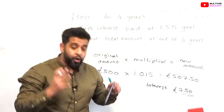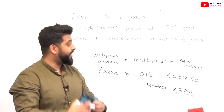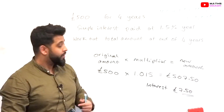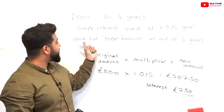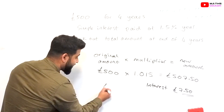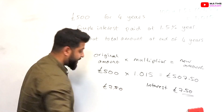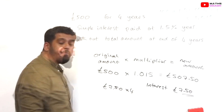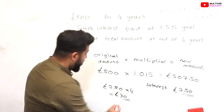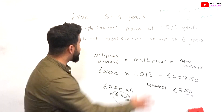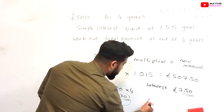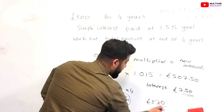Unlike compound interest, the next year you don't get 1.5% on the new amount — it's always on your original amount. The question asks for the total at the end of four years, so we multiply the £7.50 annual interest by 4, which gives us £30. In total, that will be £500 plus £30, which is £530.